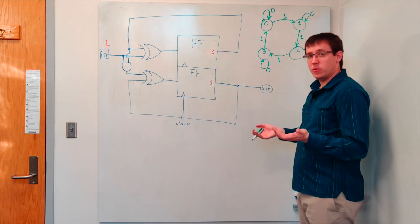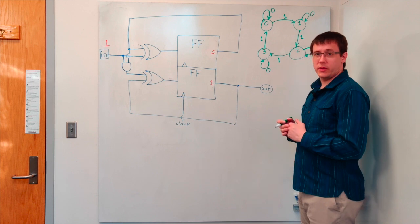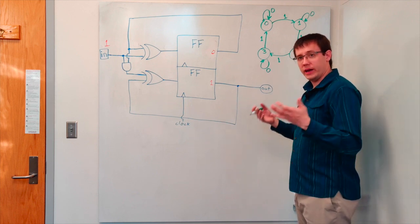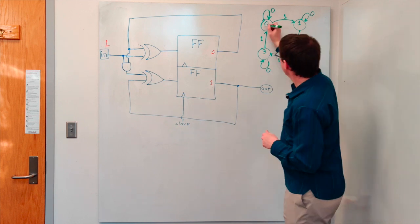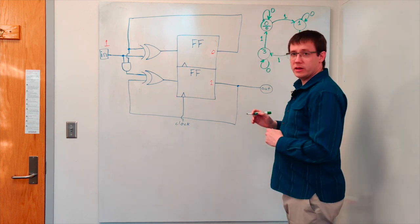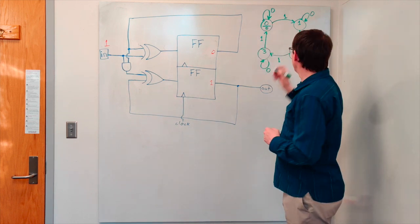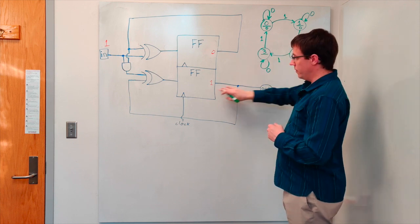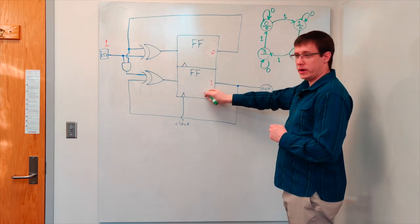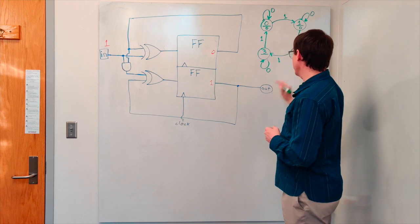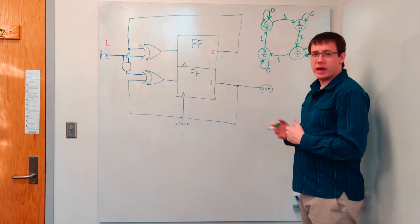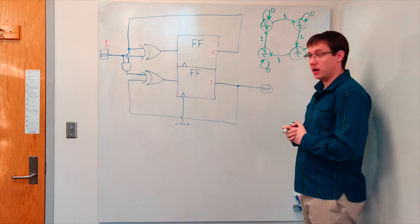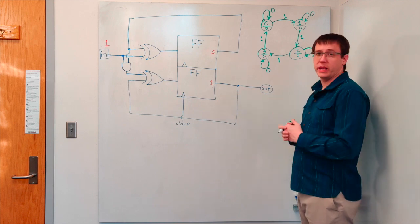We can also indicate the output of the circuit on this diagram by writing in each state what the circuit outputs when it's in that state. In state zero, the circuit outputs a zero. Likewise in state one. In states two and three, the bottom flip-flop is holding a one, and so the circuit outputs a one. And now we have an abstract representation as a finite state machine of our two-bit counter circuit.